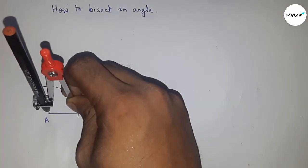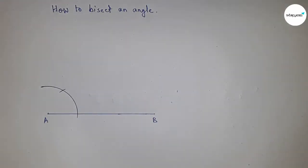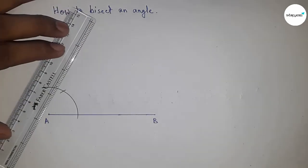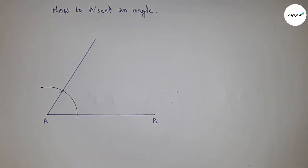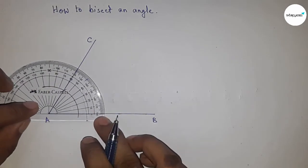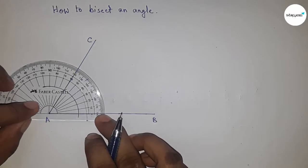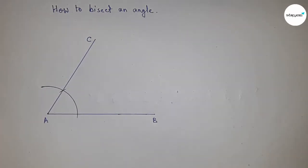A 60-degree angle. Taking the same length and cut here. Now joining this, and this is point C. Now I'm going to check whether it is 60 degrees or not. This is perfectly 60 degrees.